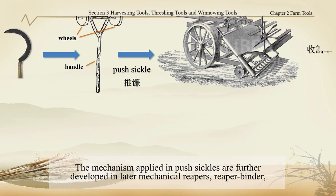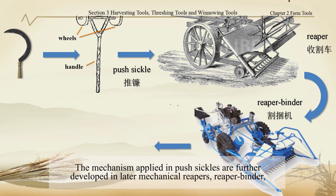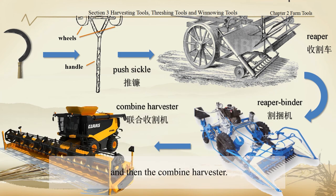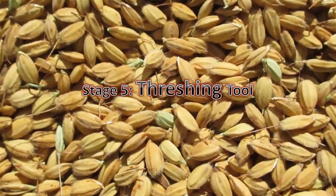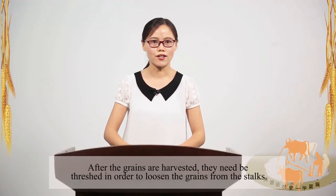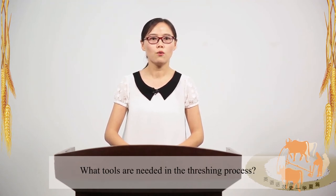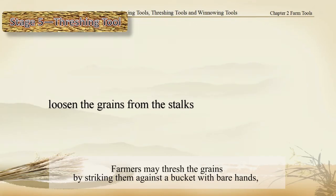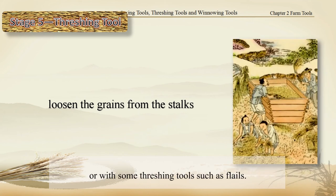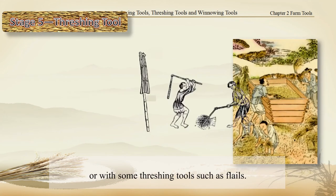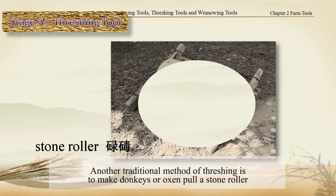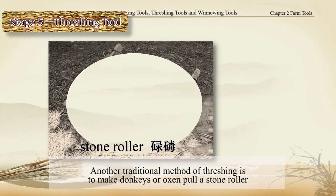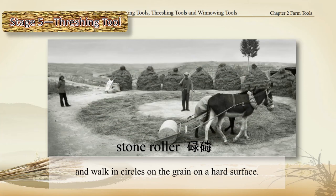The mechanisms applied in push sickles are further developed in later mechanical rippers, ripper binders, and then the combined harvester. After the grains are harvested, they need to be spread out of the stock. Farmers may thresh the grains by striking them against a bucket with bare hands or with threshing tools such as flails. Another traditional method of threshing is to make donkeys or oxen pull a stone roller and work in circles on the grain on a hard surface.